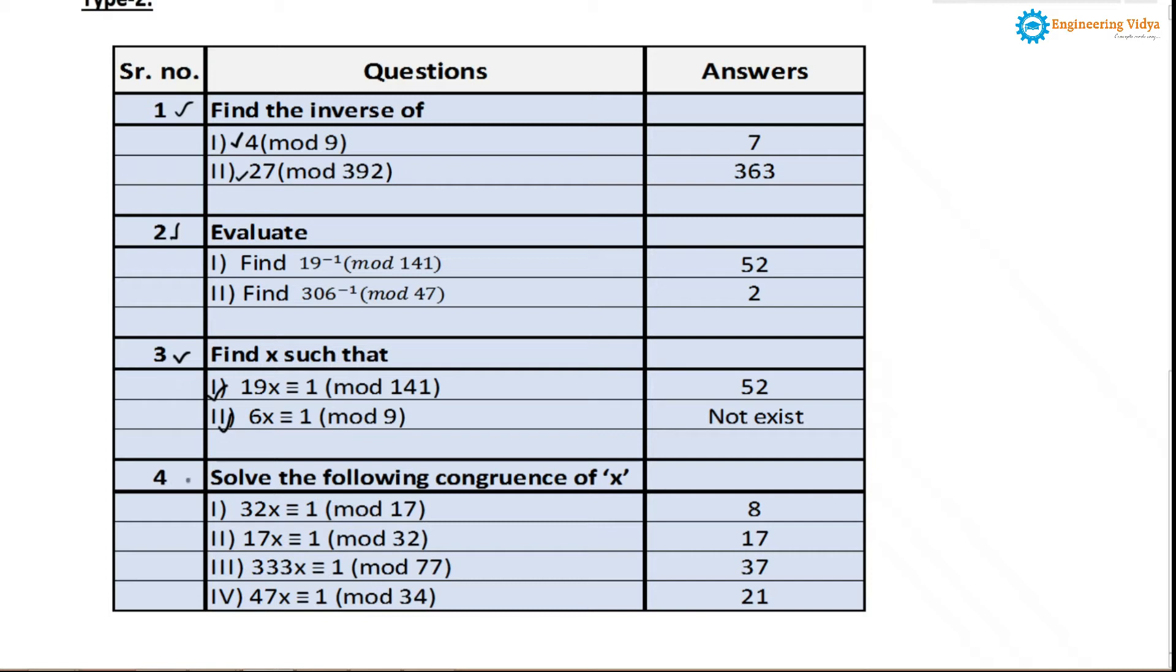Now let's start with section number 4. In section number 4, they are saying solve the following congruence of x. Here the first problem is 32 into x is congruent to 1 mod 17. If you see this problem, this is a similar kind of problem to section number 3. Section number 3 and section number 4 are the same kind of problem.